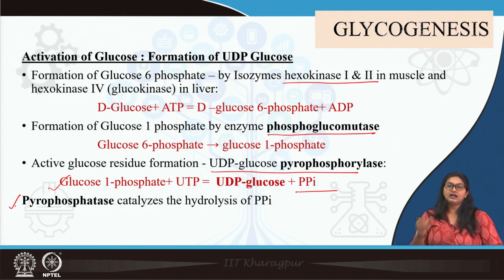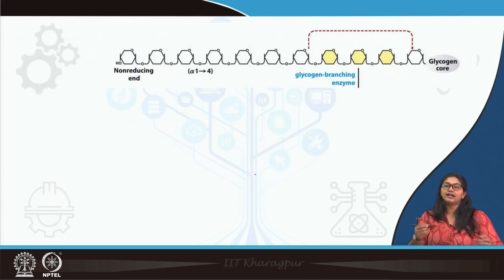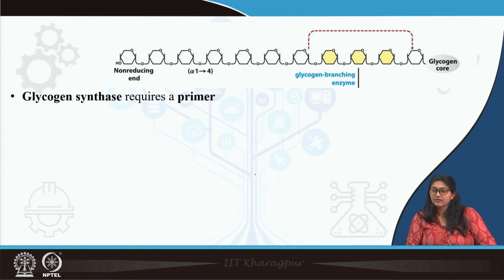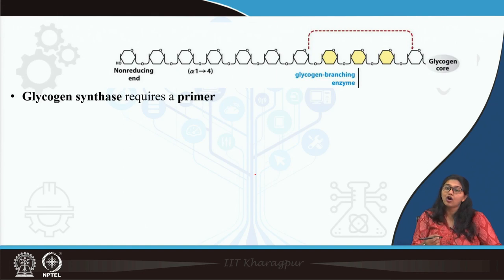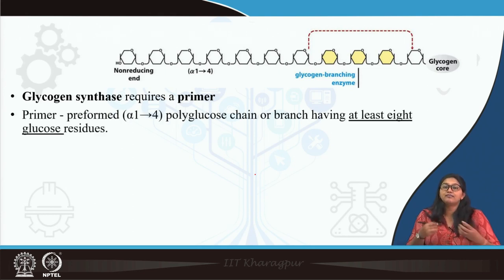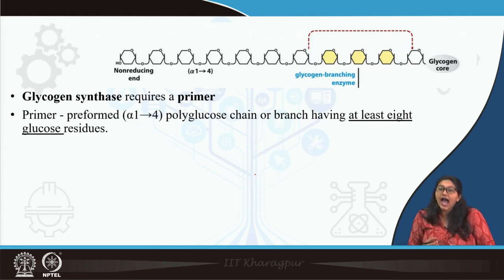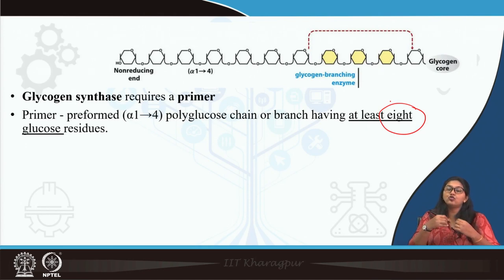Finally, we obtain the activated glucose — UDP-glucose — which can donate glucose molecules. UDP-glucose adds glucose molecules over a growing glucose chain. Glycogen synthase forms alpha 1,4 glycosidic bonds, but it needs a primer — glycogen synthase cannot synthesize a glycogen chain de novo and cannot initiate the reaction. It needs a primer: a preformed polyglucose chain with those glucose molecules attached by alpha 1,4 glycosidic bonds, having at least 8 glucose residues, over which glycogen synthase can act.